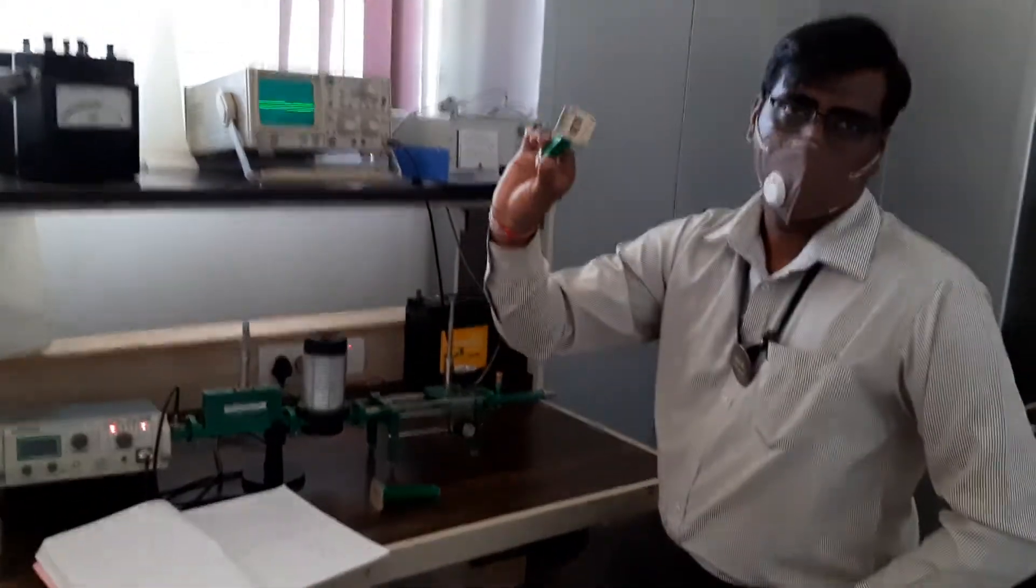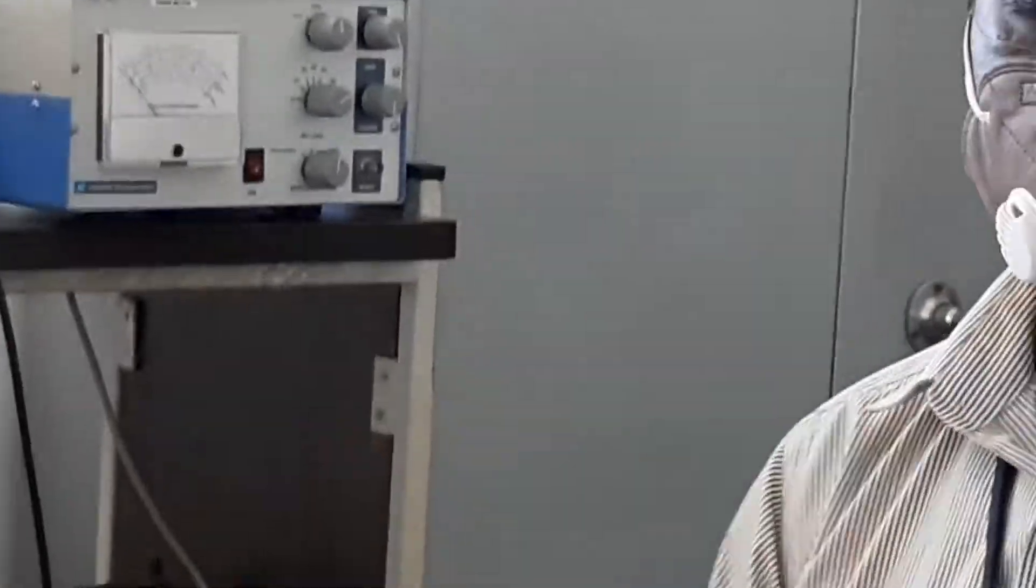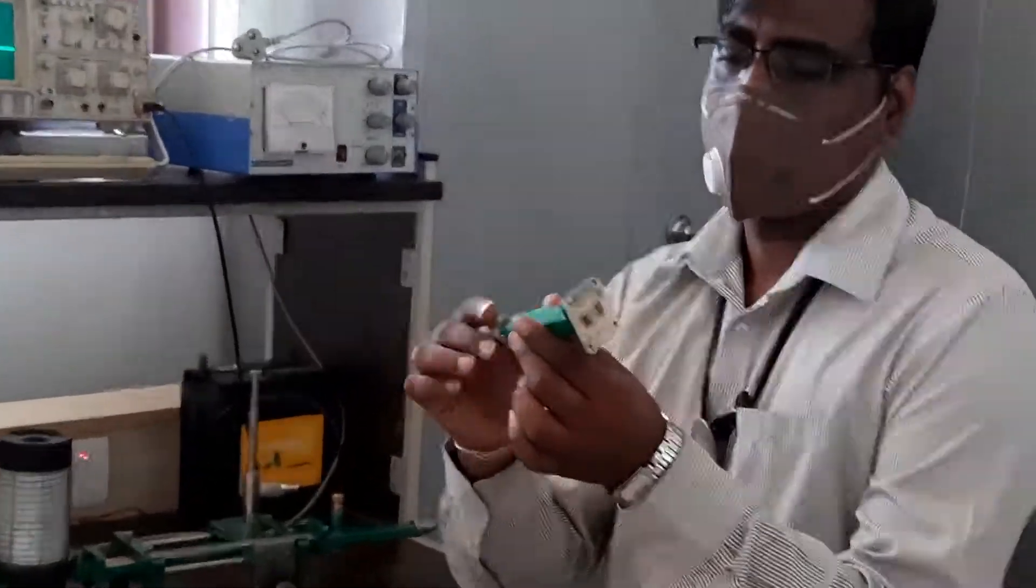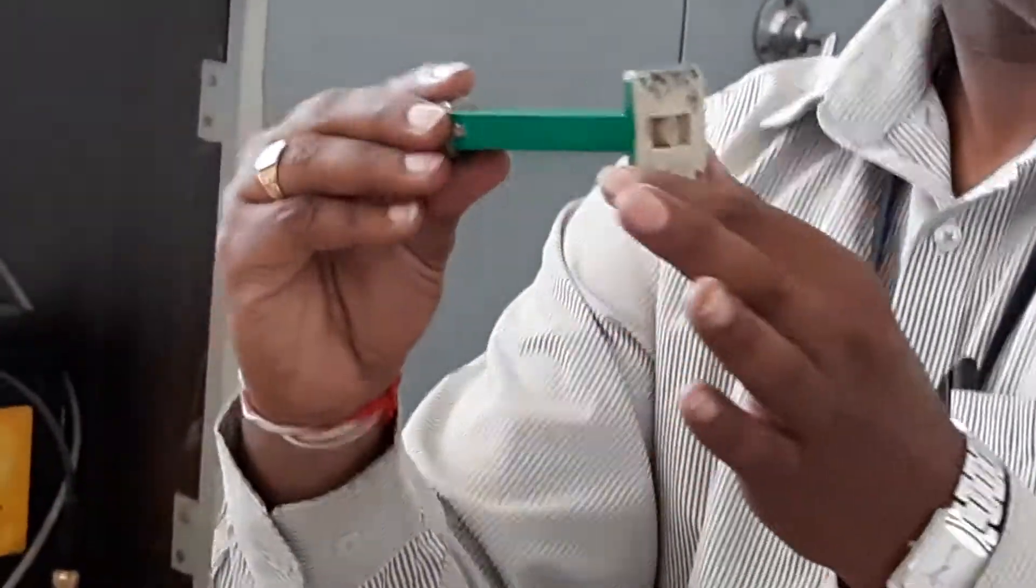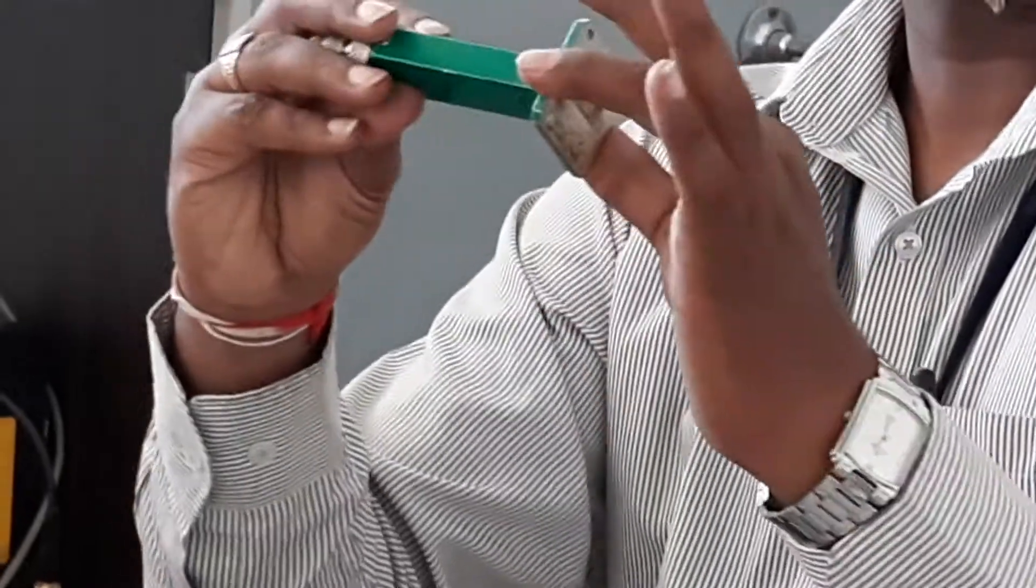This is the movable short which will be having variable resistance. So this is a movable short. It is not the detector, it is a movable short. It is not having any detection component.